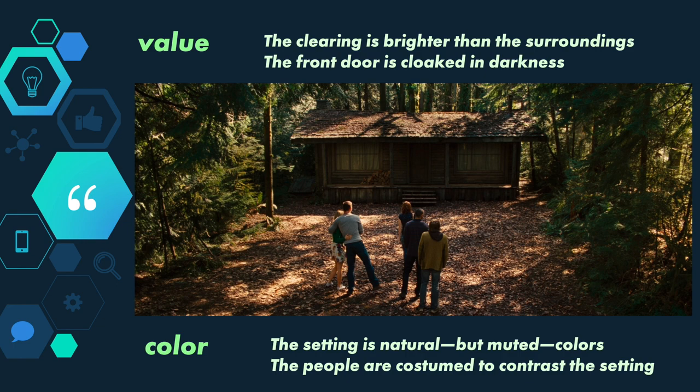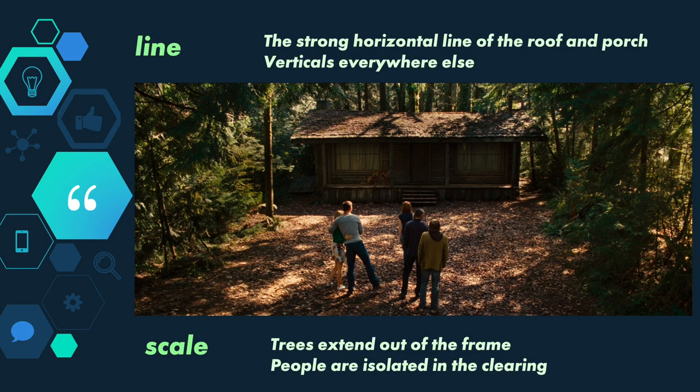Also note how everything in the image is muted — it's all kind of dark. You can pretty much guess this isn't a comedy. Line refers to how the elements of an image draw your eye in certain directions. Here, the line of the roof and the bottom of the porch are the strongest lines, and horizontal lines often convey stability and groundedness. Although here, the other elements are undercutting a sense of stability, because everything else in the frame — from the trees to the utility pole to the characters — is oriented in a vertical direction. This makes the cabin itself stick out, and the contrast adds to how it makes us feel uneasy.